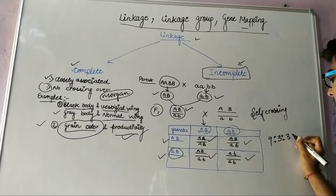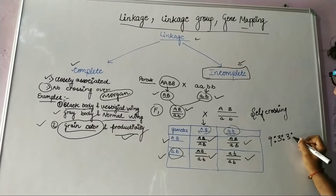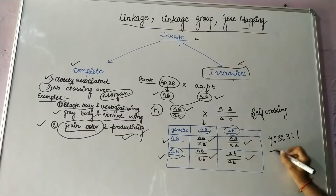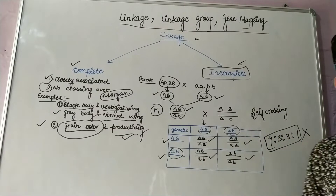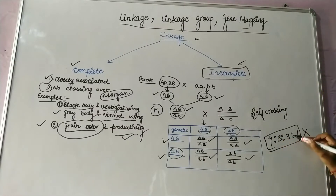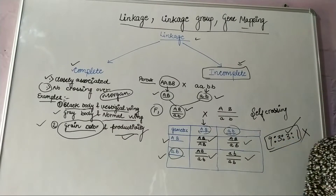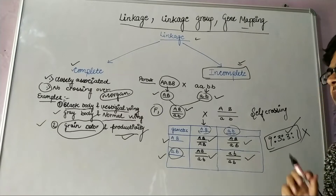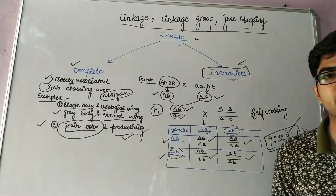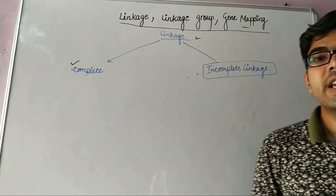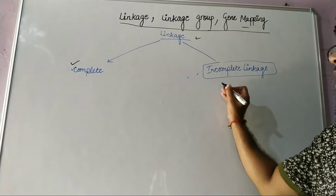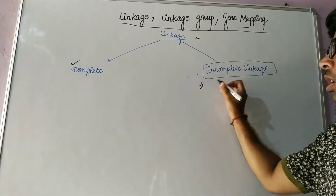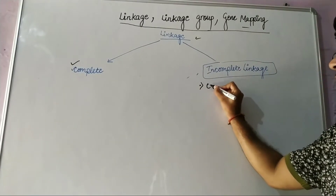The normal dihybrid ratio is 9:3:3:1, but in complete linkage there is deviation from this ratio. In case of incomplete linkage, there is found crossing over, which means these genes are not completely linked.